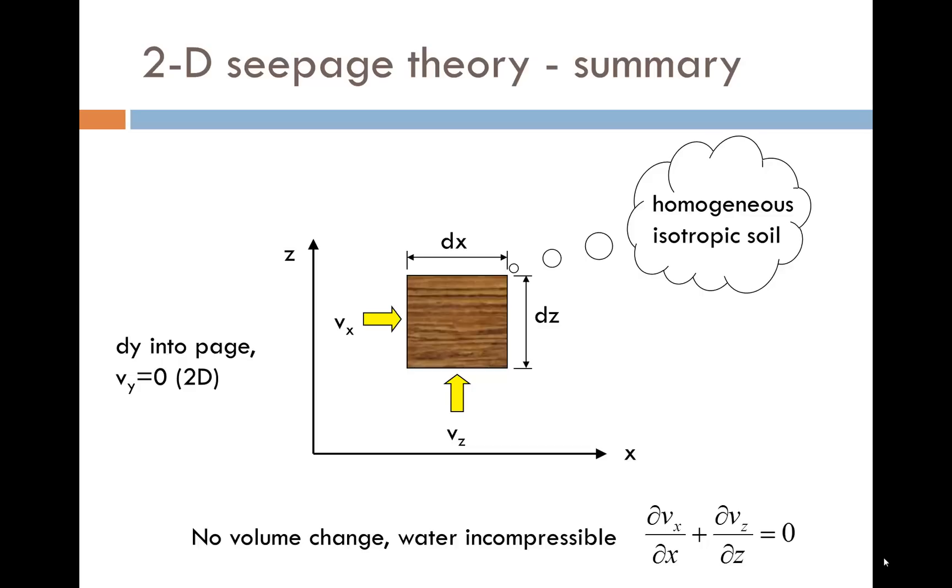If the element does not change volume and water is incompressible, then it can be shown quite easily that dvx/dx plus dvz/dz equals 0. And this is known as the equation of continuity in two dimensions.